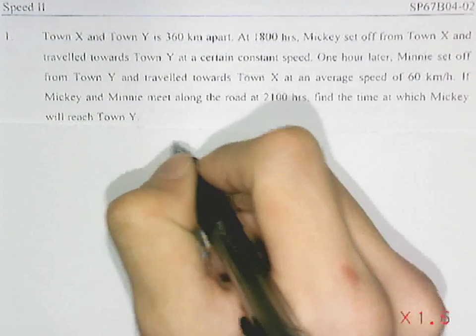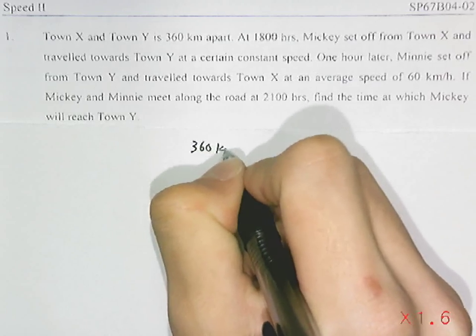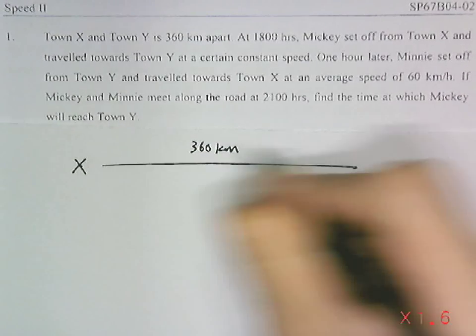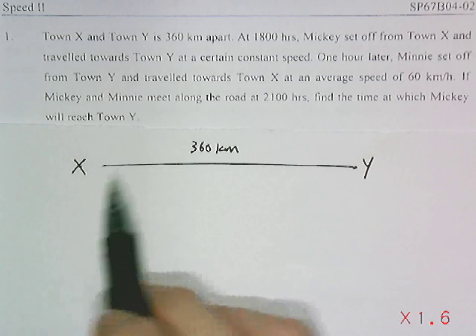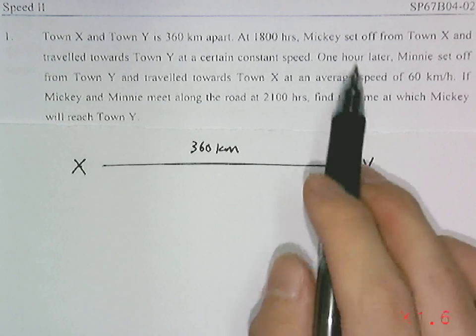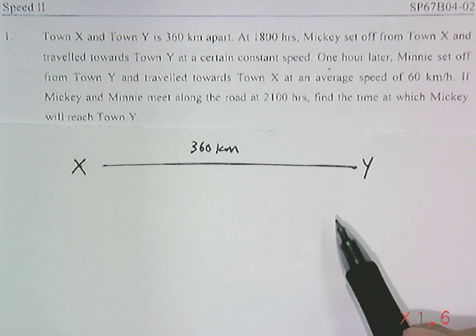Town X and Town Y are 360 km apart. At 1800 hours, Mickey set off from Town X and traveled towards Town Y at a certain constant speed. One hour later, Minnie set off from Town Y and traveled towards Town X at an average speed of 60 km/h.